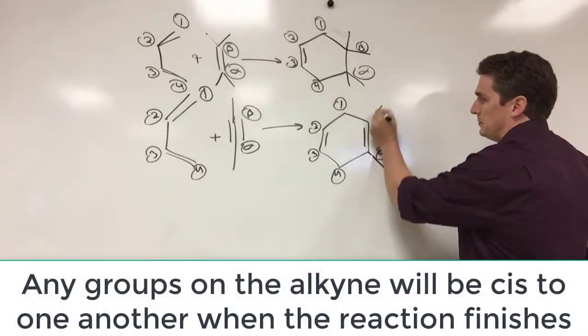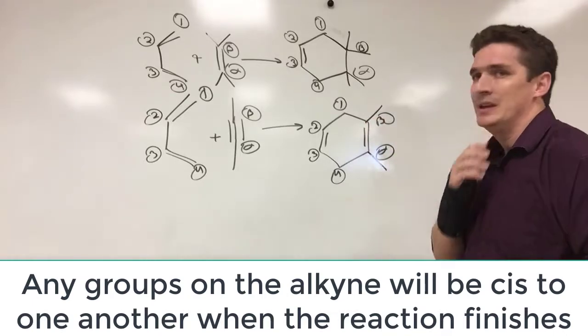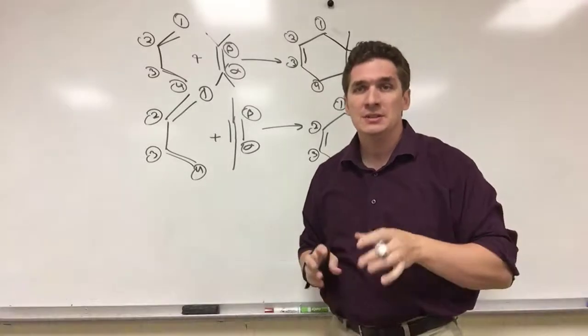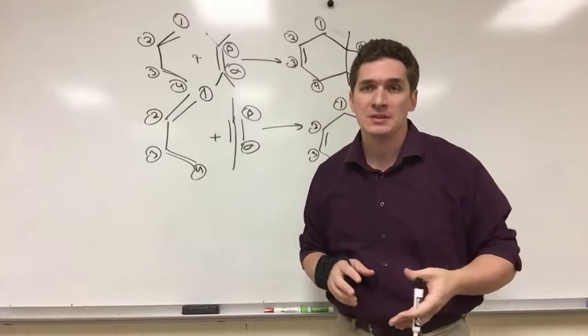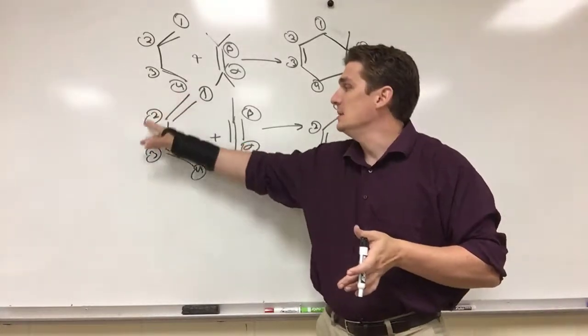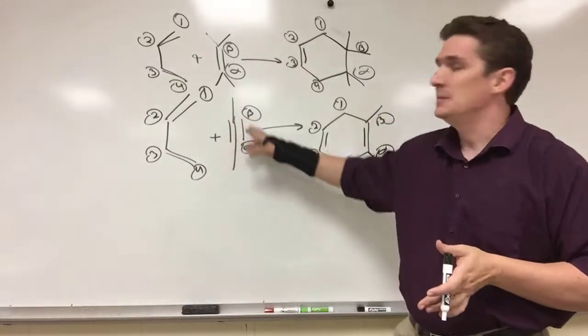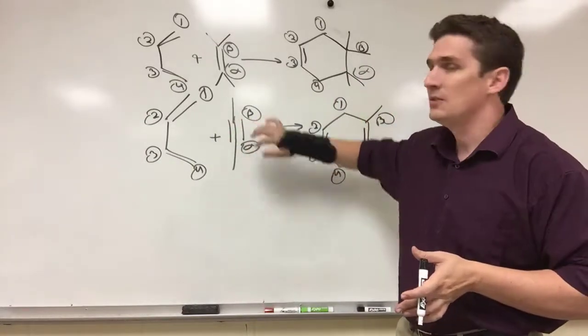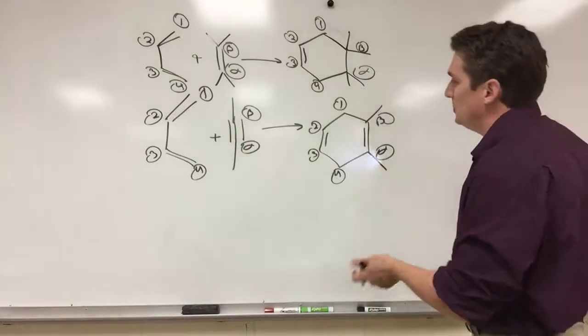So we end up getting this compound. So go back to the videos on Diels-Alder synthesis. It's going to follow the same plots. Big thing here is to help you predict the products, number your diene first. Number your alkyne, specifically the carbons involved in the triple bond.